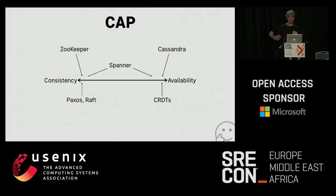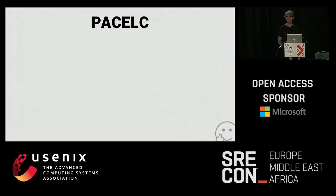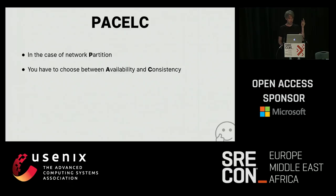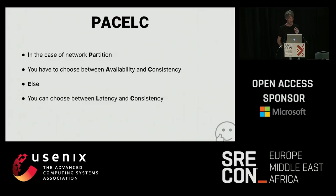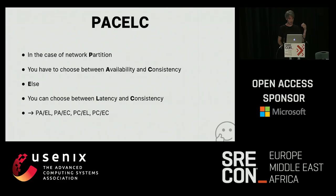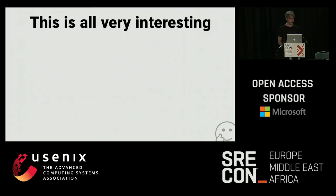Spanner famously claims to give opt-in consistency when times are good and falls back to availability modes when times are bad. There's also this thing called PACELC — a specialization of CAP that's a bit more subtle and useful. It says that in the case of a network partition you choose between availability and consistency, but otherwise you choose between latency and consistency. Systems can be categorized as PA/EL or PC/EL, and so on — Mongo is one of these, Cassandra is another.